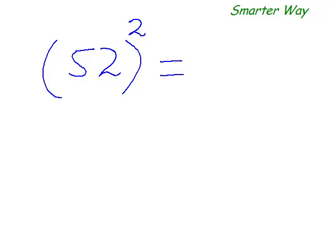Okay, so now let me do it the smarter way. So 25 plus 2 is 27, and square of 2 is 4, so 04. This is my answer. Could you understand that?